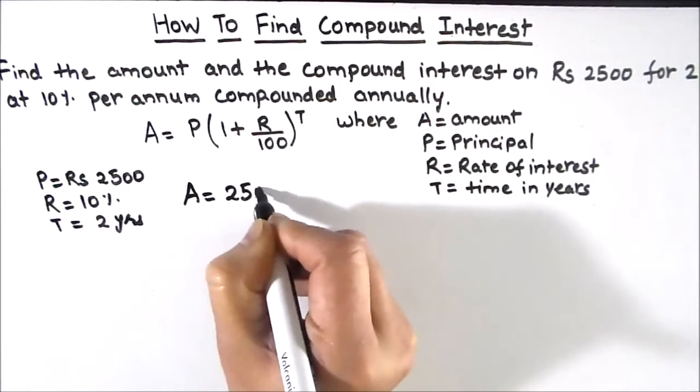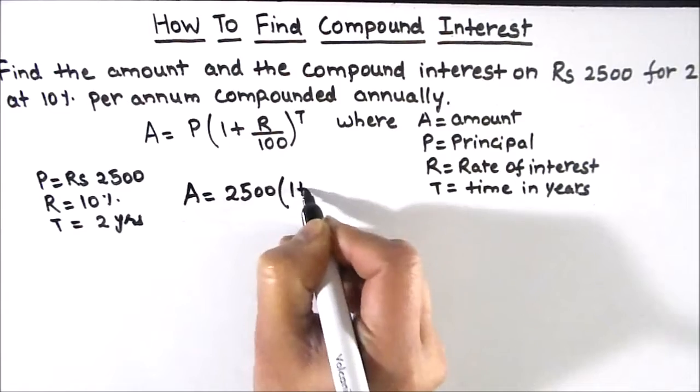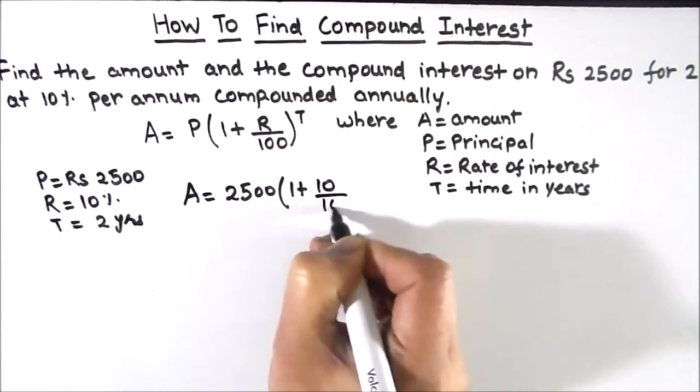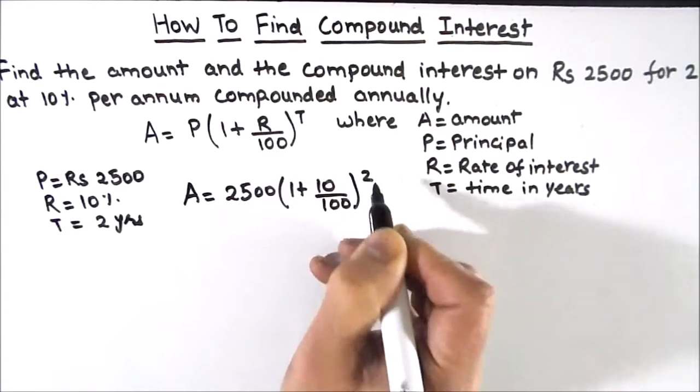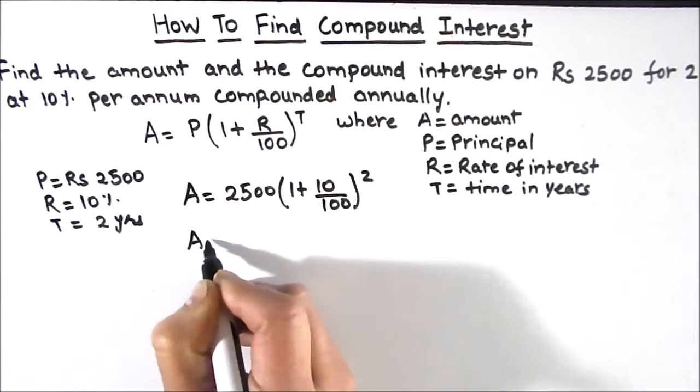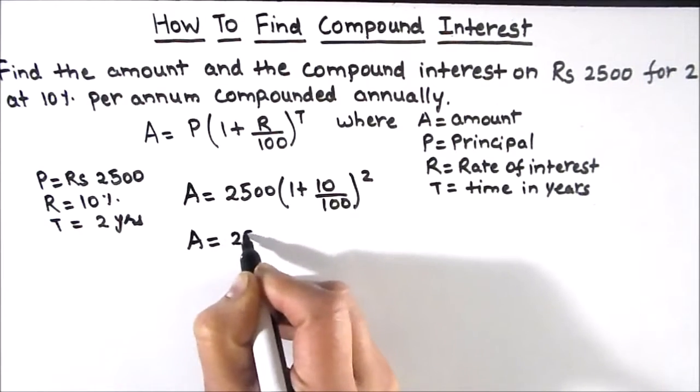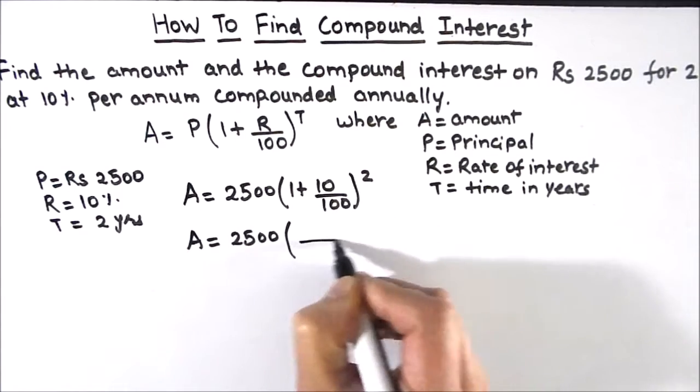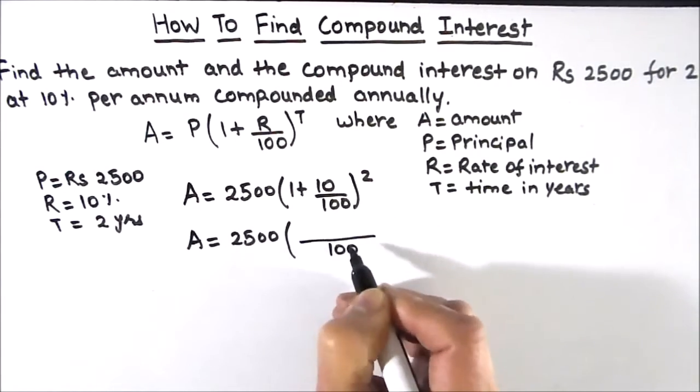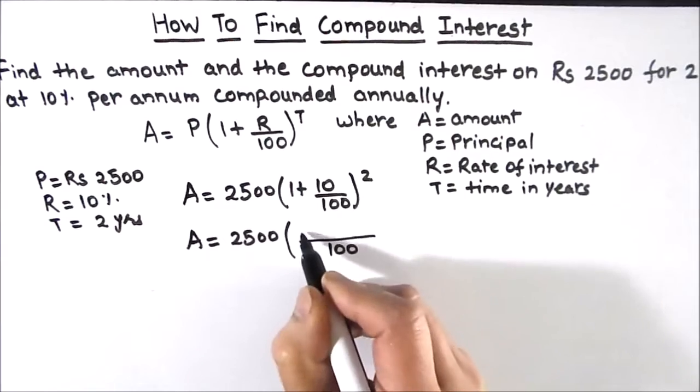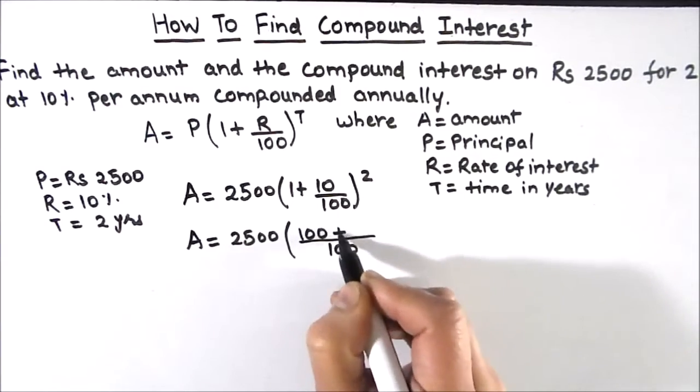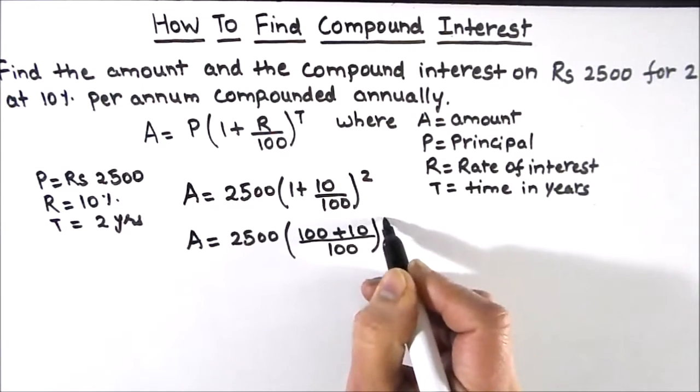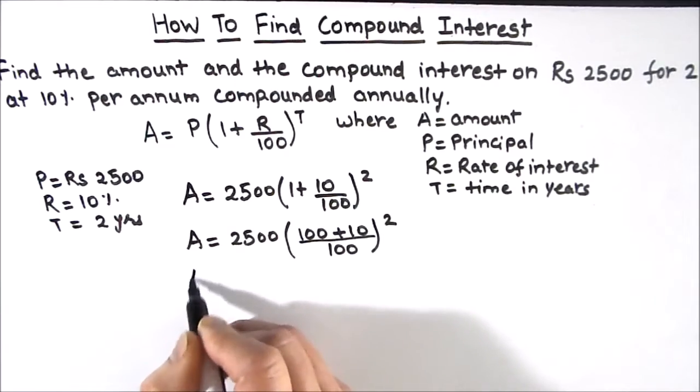A equals 2500 times 1 plus 10 upon 100 whole raised to power 2. Now we will take the LCM, which is 100, and 1 times 100 is 100, 100 plus 10 whole square.